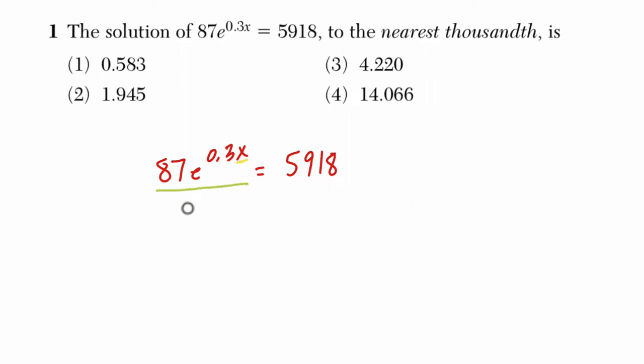I would actually first divide both sides by 87. The first thing I like to do in these kind of problems is isolate or get this e term all by itself. And that's going to help us out in a moment. So we have 5918 divided by 87.